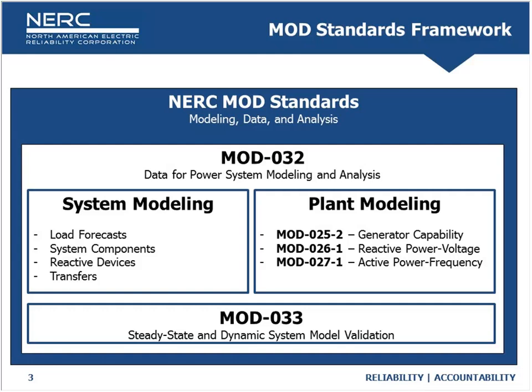When it comes down to what we're talking about today, it's really the plant modeling — which is MOD-25, MOD-26, and MOD-27. MOD-25 is the generator reactive capability, testing which proves you can get to your Pmax, Qmax, Qmin, and Pmin values via test. MOD-26 and MOD-27 are the dynamic model validation or model verification standards, where you go into the plant, perform a verification of some sort, and provide a report showing that the model reasonably matches what's actually installed in the field.